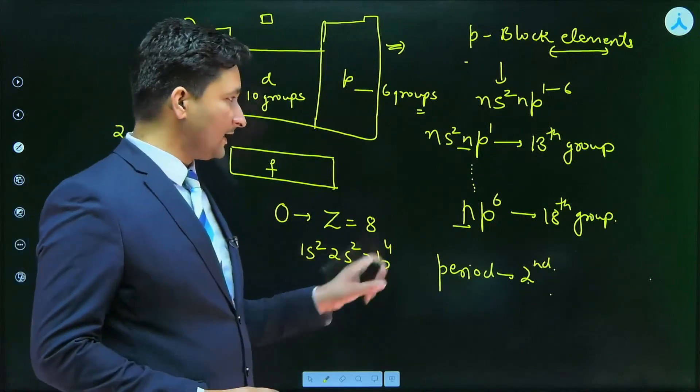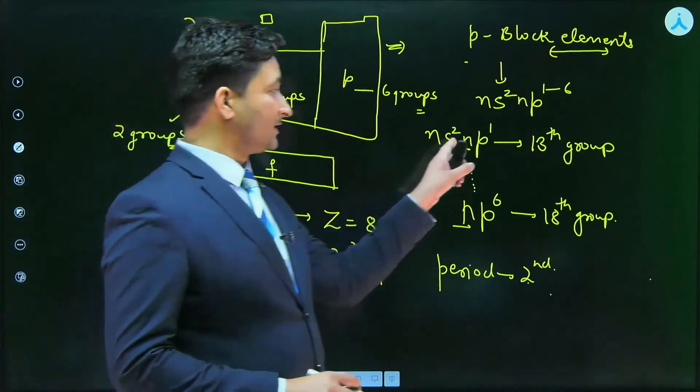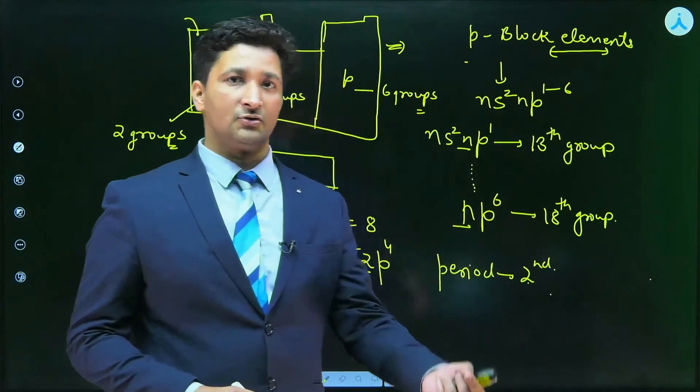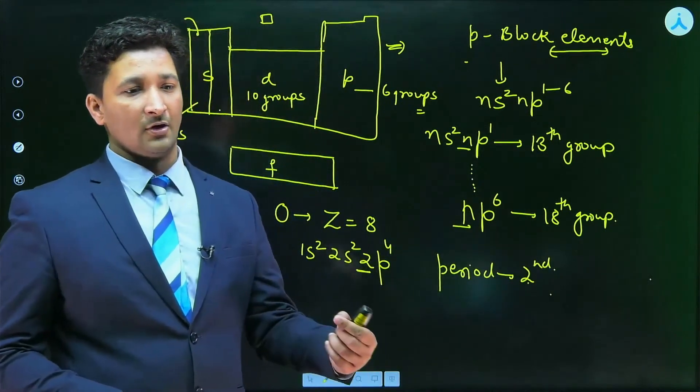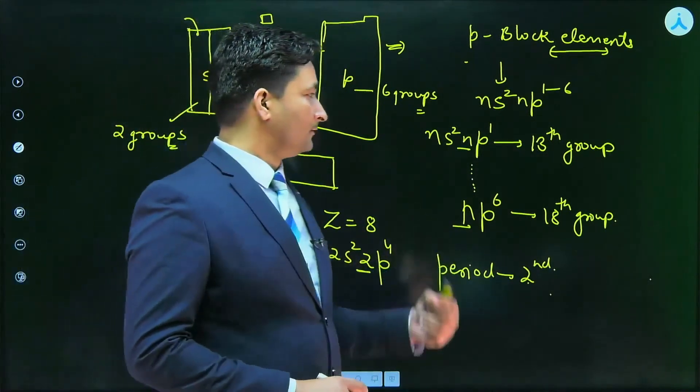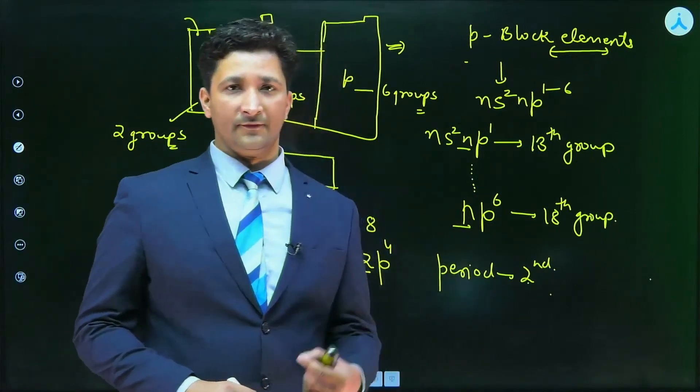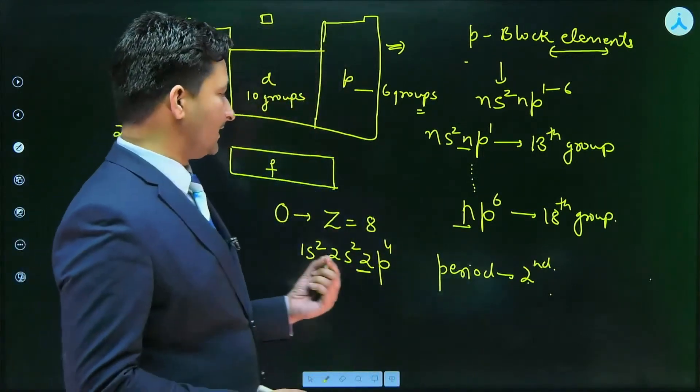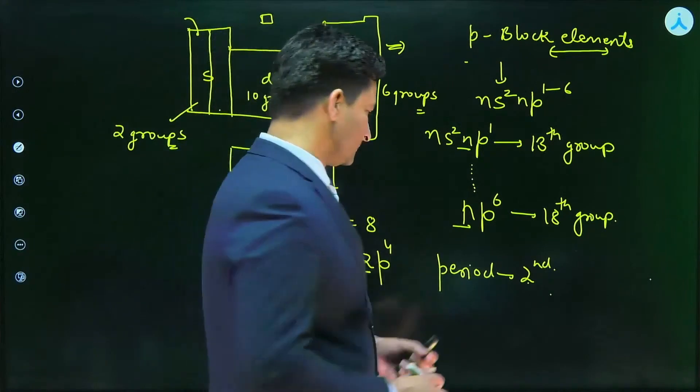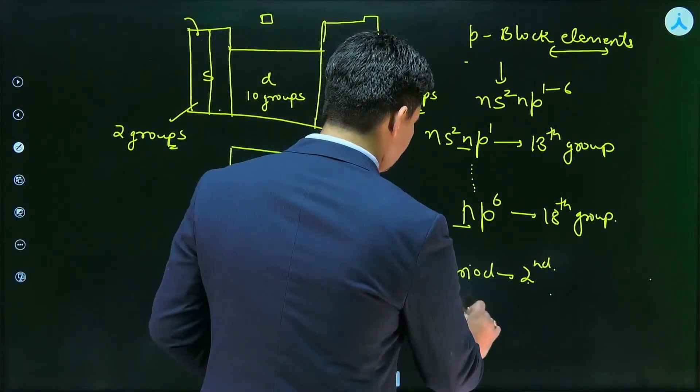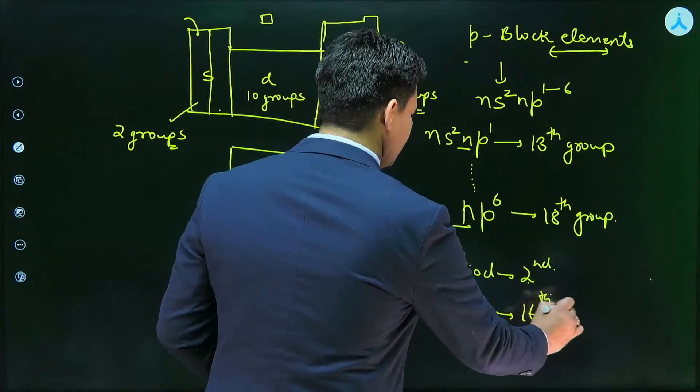Now you can see that P has 4 electrons. We have discussed that if it is NP1, then it belongs to group 13. NP2 belongs to group 14, NP3 belongs to group 15, and if it is NP4, then it belongs to group 16. So its group is 16th group.